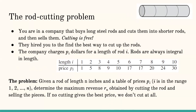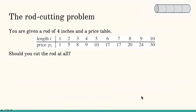The rod cutting problem: we are given a table with lengths of rods and corresponding prices, consisting of P_i. What we would like to do is determine the maximum revenue R_n obtained by cutting the rod and selling the pieces. If no cutting is needed and that gives the best price, then we don't cut at all.